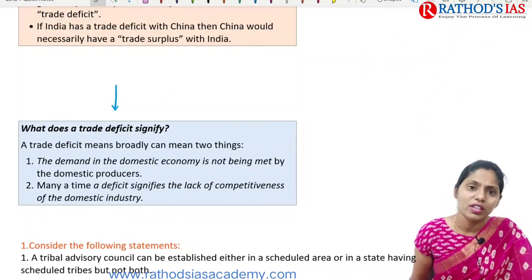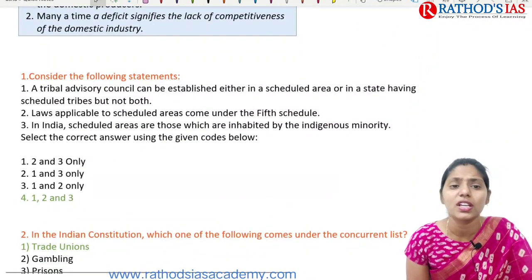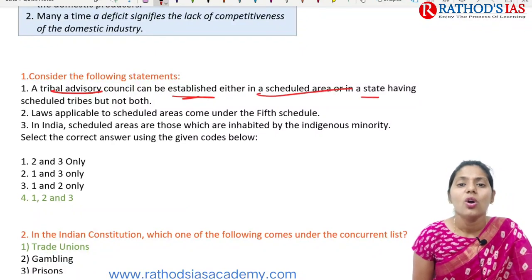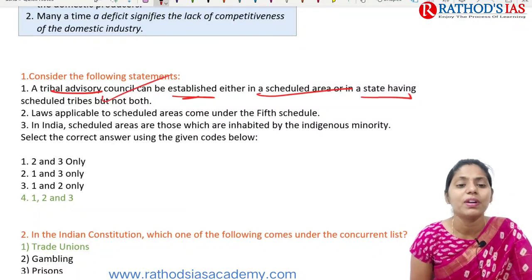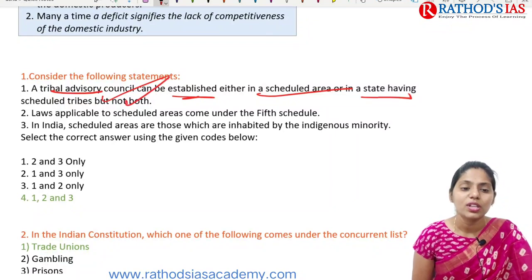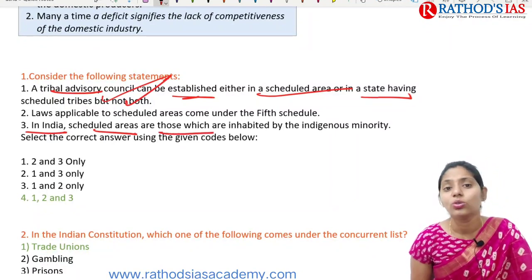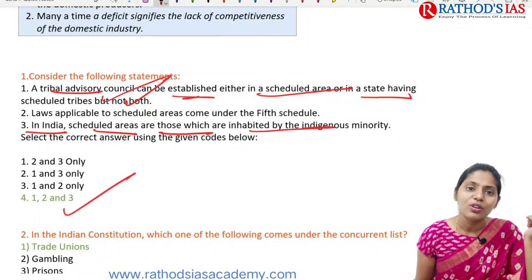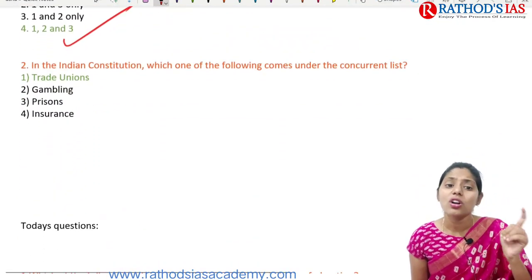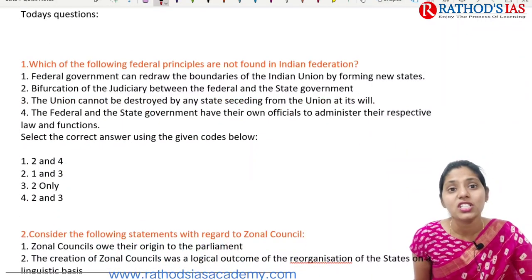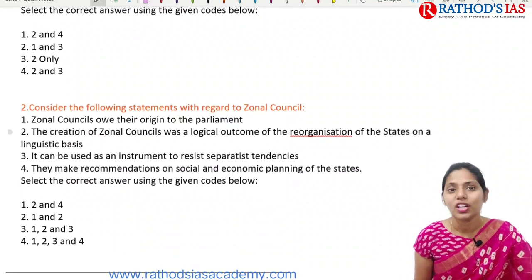Today's questions: First, regarding the Tribal Advisory Council — it can be established either in the scheduled area or in a state which has scheduled tribes. Laws applicable in scheduled areas come under the Fifth Schedule. Scheduled areas are those inhabited by indigenous community minorities. For the Indian Constitution concurrent list question, trade unions is a correct option. These are today's questions on Indian federalism and zonal councils — please answer in the comment box.